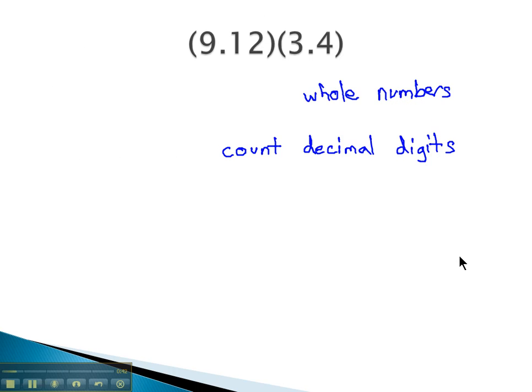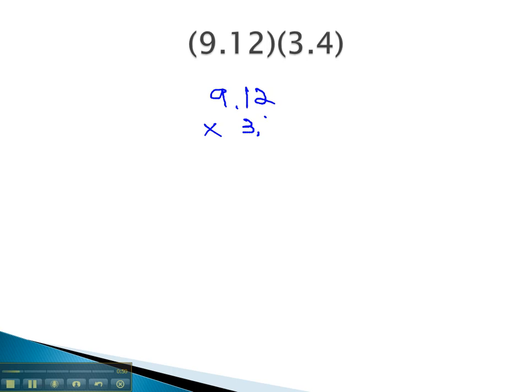So for example, if we have 9.12 times 3.4, we'll start multiplying them like whole numbers, 9.12 times 3.4.